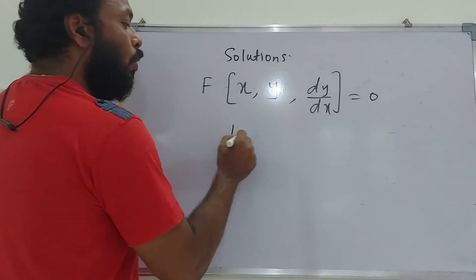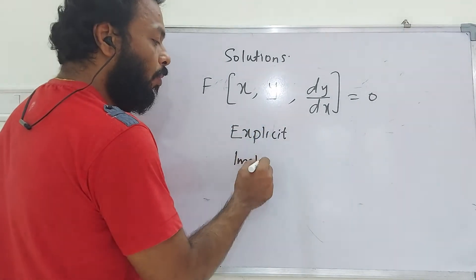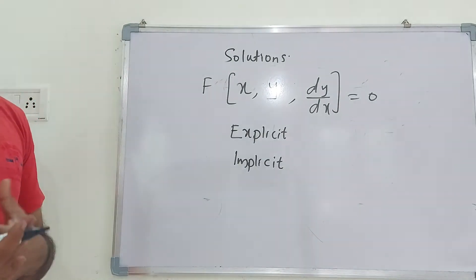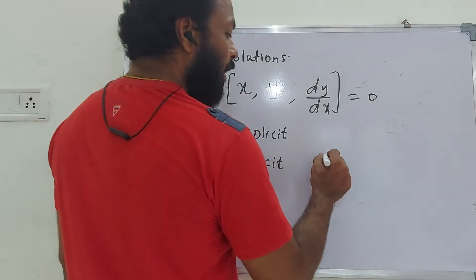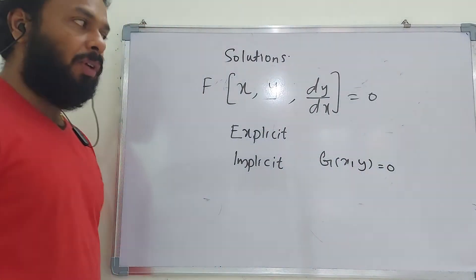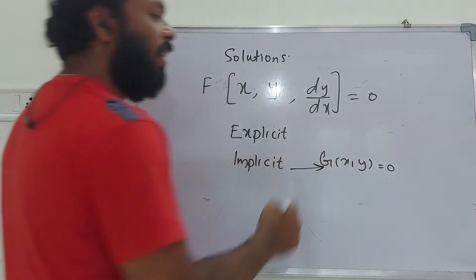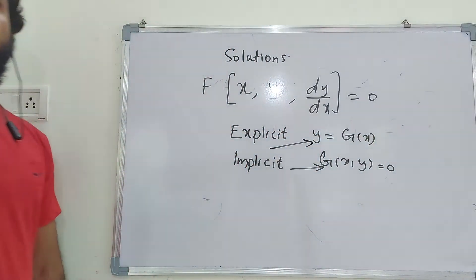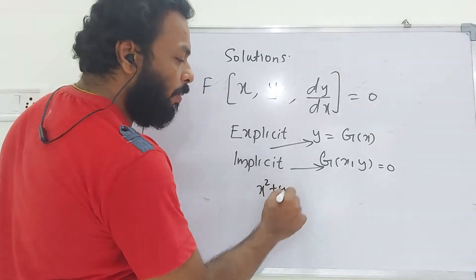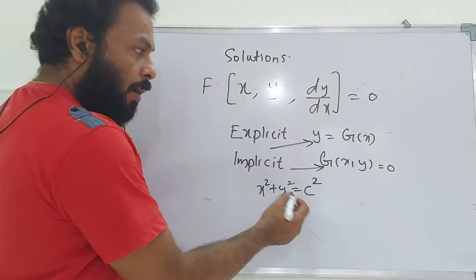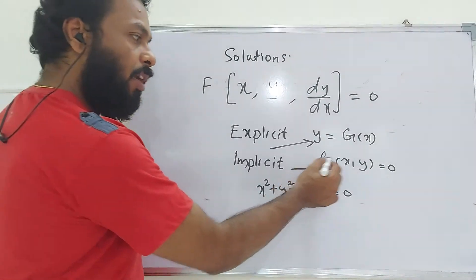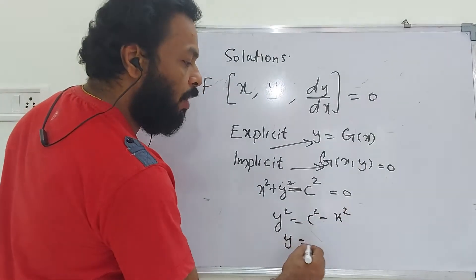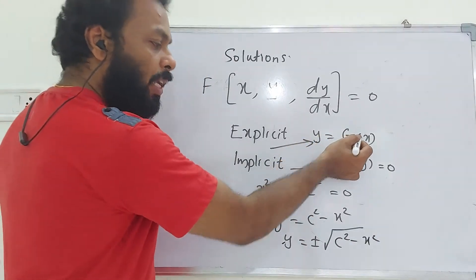Solutions of a first-order ODE can be expressed in two forms. The implicit form is a relation g(x, y) = 0. For example, x² + y² = c² can be written as x² + y² - c² = 0, which is implicit. The explicit form is y = g(x). From x² + y² = c², we get y = ±√(c² - x²), which is explicit.